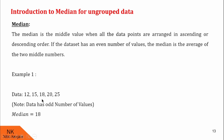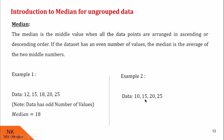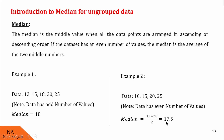Now consider another example. Here the data set consists of numbers 10, 15, 20 and 25 — an even number of values. So the median will be the average of the two middle numbers. The two middle numbers lie at position second and third. So their average, that is the average of 15 and 20, would be 17.5. So here median will be 17.5.